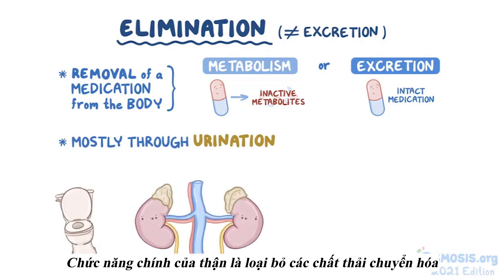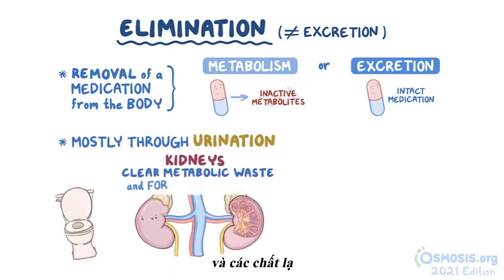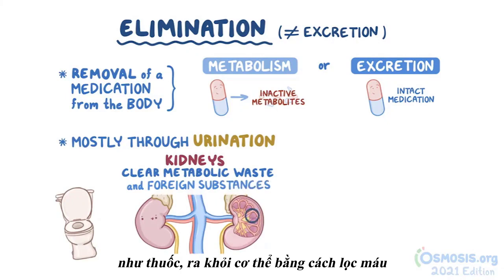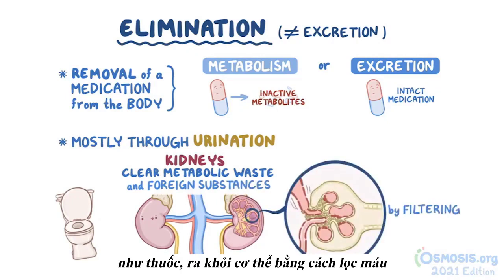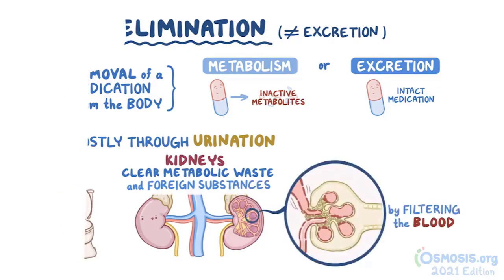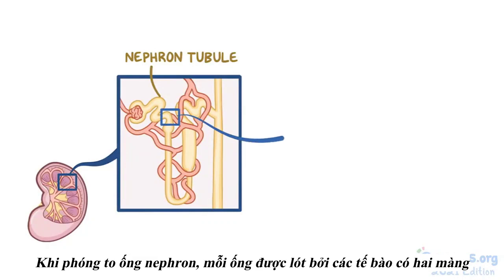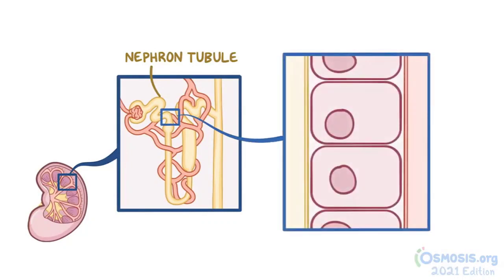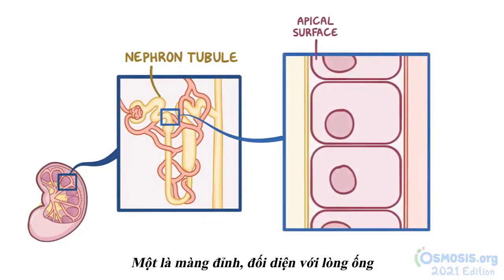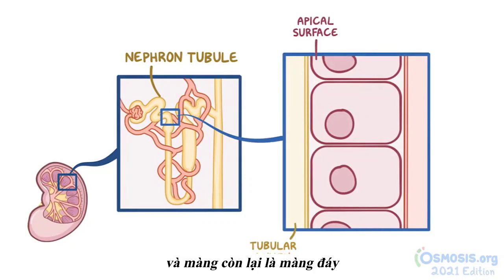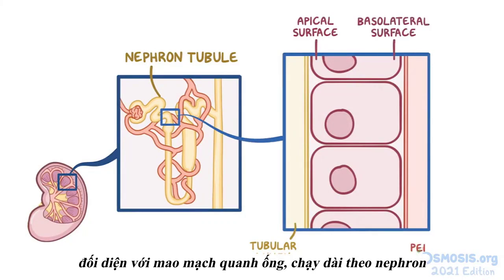The major function of the kidneys is to clear metabolic waste material and foreign substances, like medications, from the body by filtering the blood. Zooming in on a nephron's tubule, each one is lined by cells that have two surfaces: the apical surface, which faces the tubular lumen, and the basolateral surface, which faces the paratubular capillaries that run alongside the nephron.